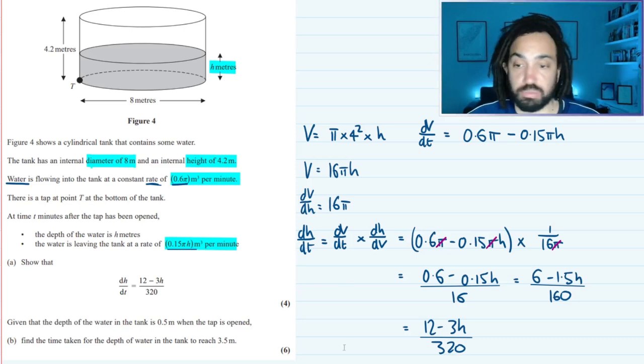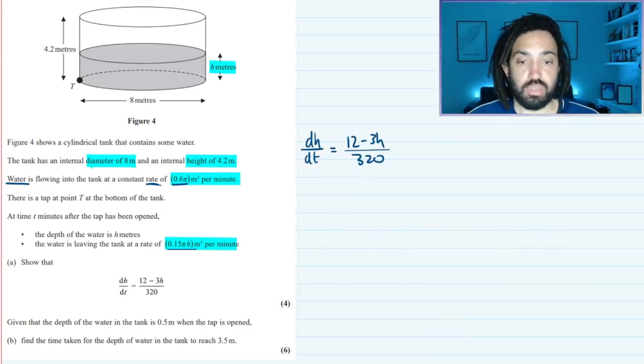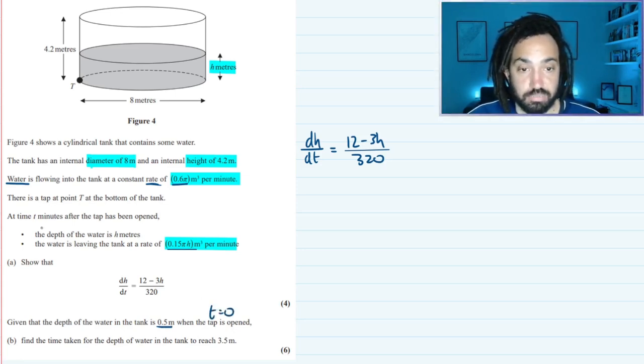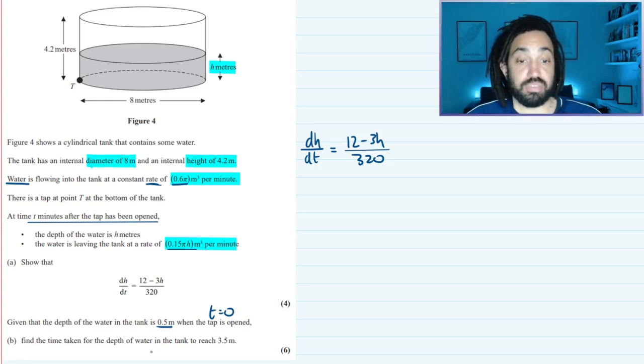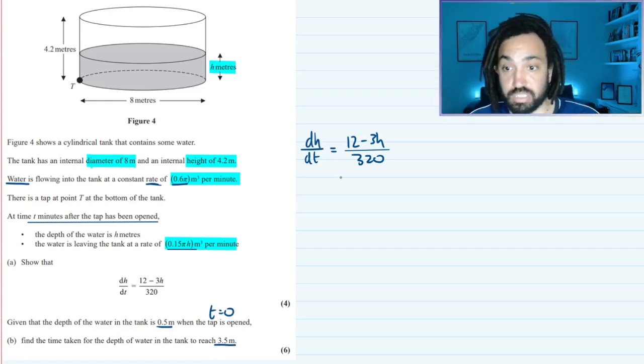Okay perfect let's grab some more space. Now we are told that the depth of the water in the tank is 0.5 when the tap is opened so that's when t equals 0. Find the time taken for the depth of the water in the tank to reach 3.5 meters. So we're going to have to solve this differential equation essentially.